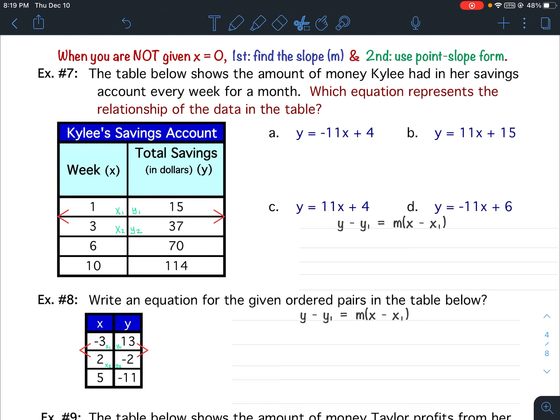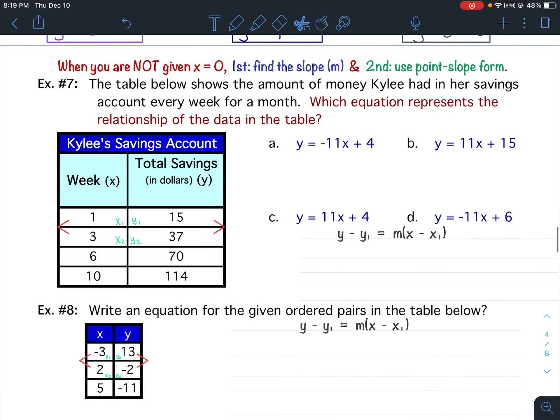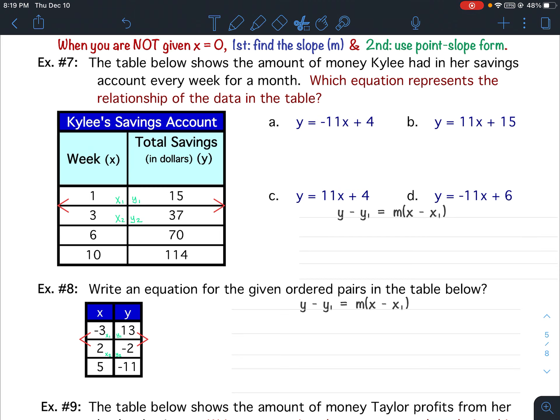Alright, so again, when you are not given 0 in the xy chart, when you're not given x equals 0, your first step will be to find the slope, and the second step will be to use the point slope form, which is what we used in example 6. Okay, so do we see a 0 here? No, we do not.